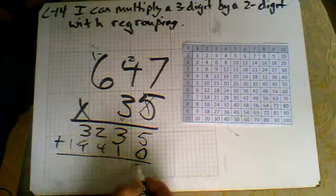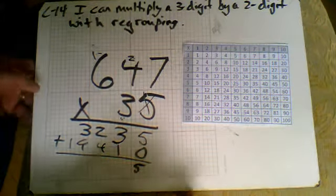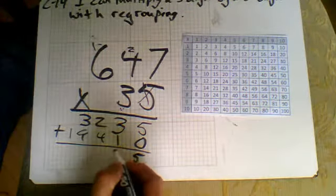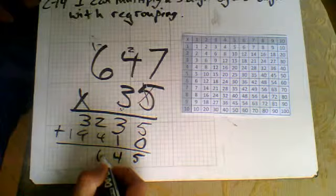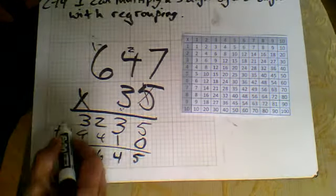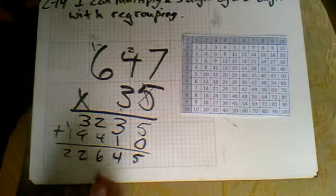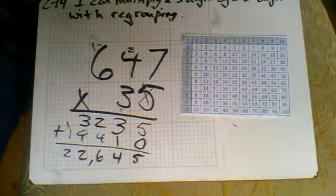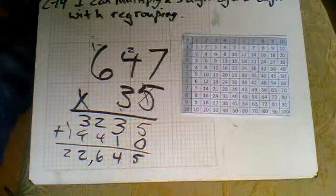Add those up. We get 5. See if you can see that there. We have 5, 4, 6. It's going to be a 12, so we're going to have to carry over. And, oops, put the comma in the wrong spot. All right, 22,645.